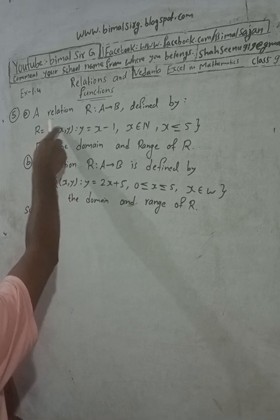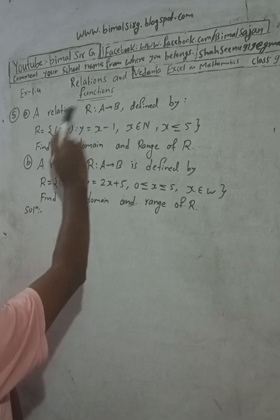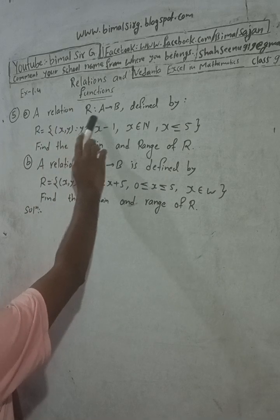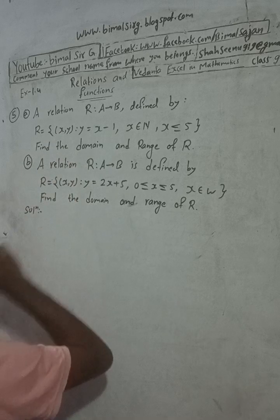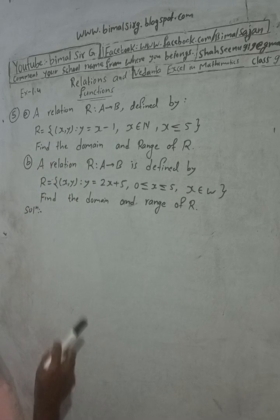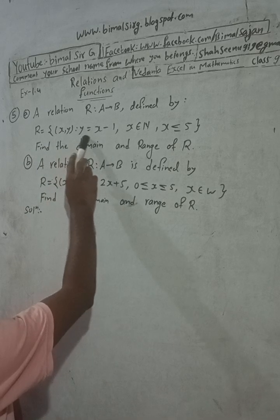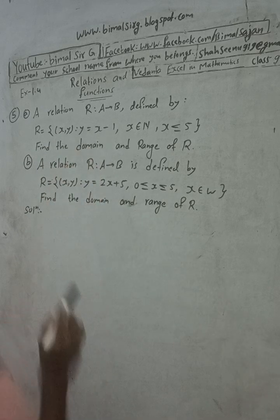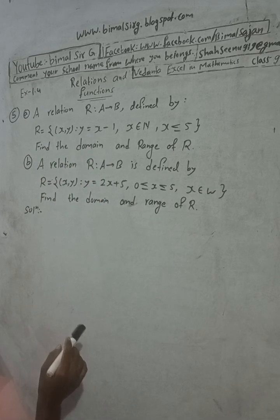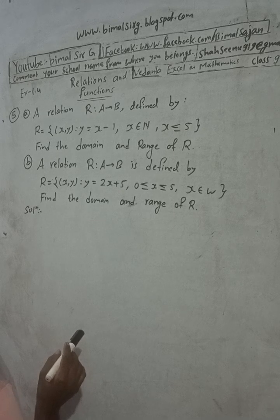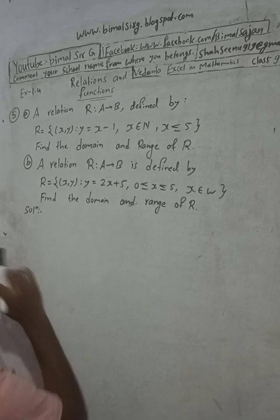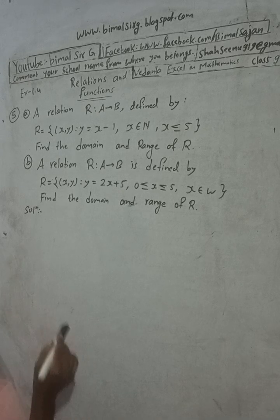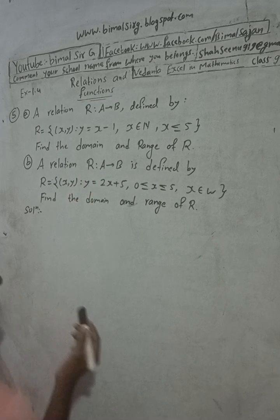Here is the question: Find all relations R from A to B, defined by R = {(x, y) such that y = x minus 1}, where x belongs to N and x is less than or equal to 5. Find the domain and range of R.